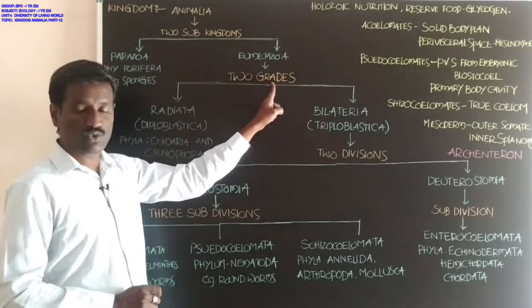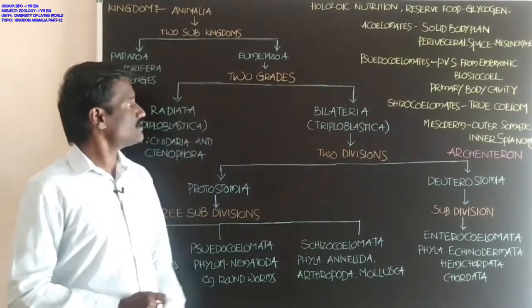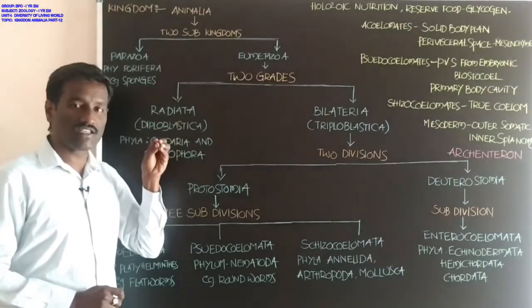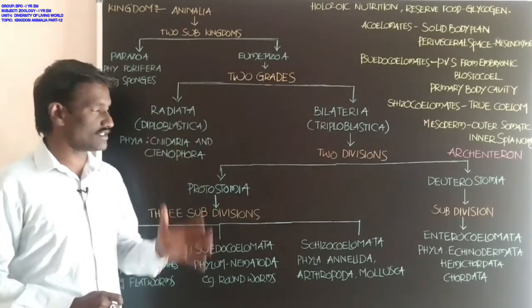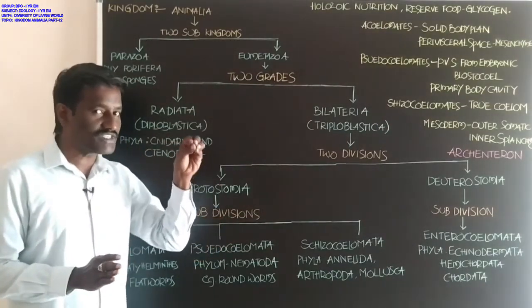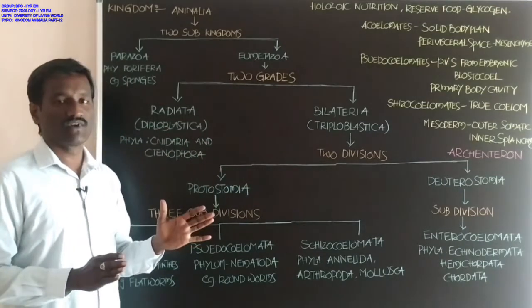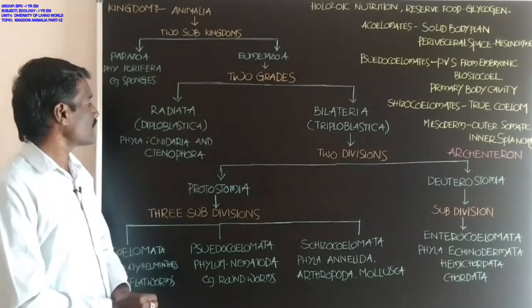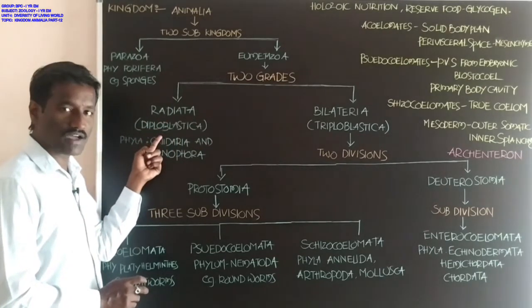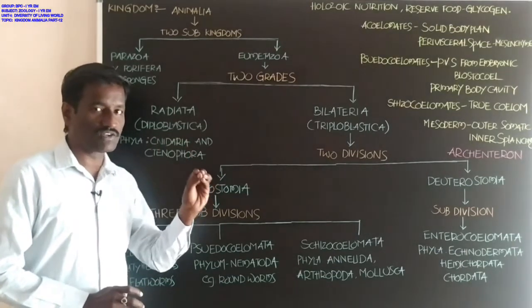Eumetazoa is divided into two grades. The first grade is Radiata, and the second is Bilateria. Grade Radiata — these are the first true Eumetazoans. These animals show radial symmetry. Radiata is also called Diploblastica. What is the meaning of Diploblastica? In these animals, if you observe embryonic development, cells unite and form two layers.